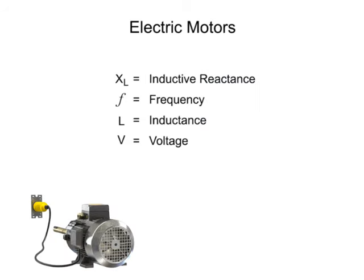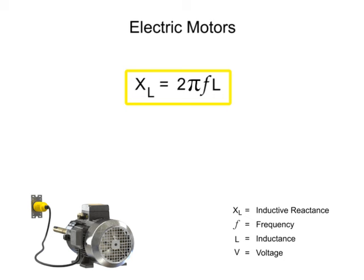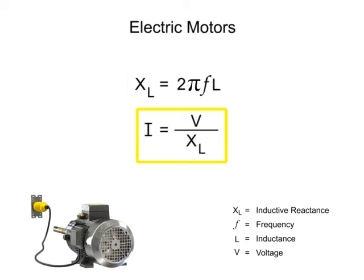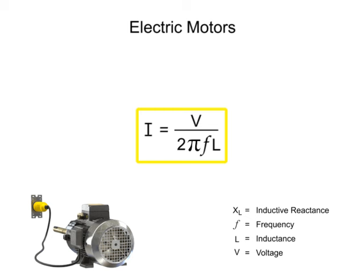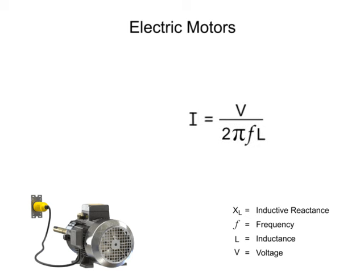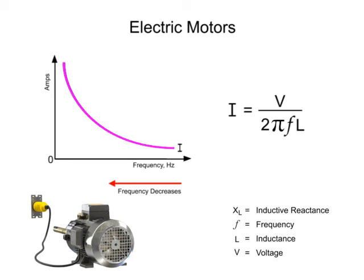In addition to rotation, technicians must pay close attention to the frequency and current requirements for a given motor application. Frequency and current can be related by two primary equations. The first relates the frequency to inductive reactance, sometimes called the resistance. The second relates the current to the same inductive reactance. By combining the two equations, we can see that frequency and current are inversely proportional. As the frequency decreases, current will increase.